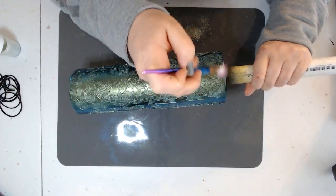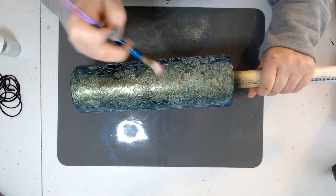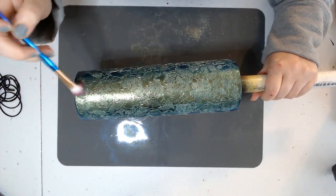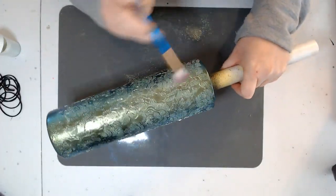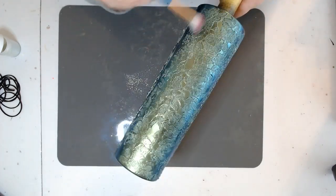Once you get it all on, just go around again one more time all the way around in a circular motion to make sure everything is rubbed in and you don't have any extra mica flakes or mica powder just hanging out.